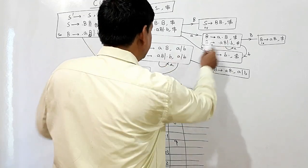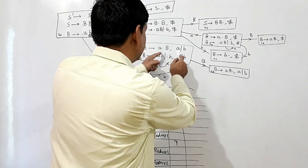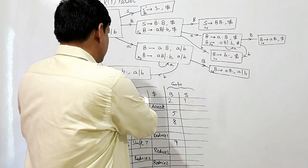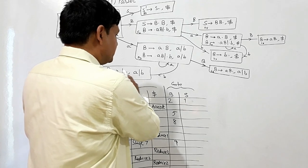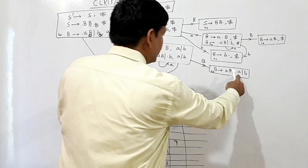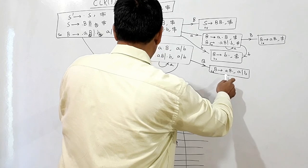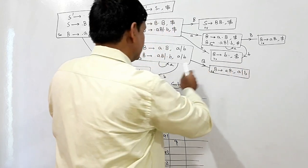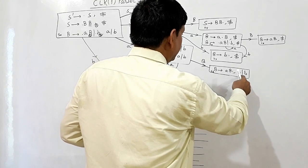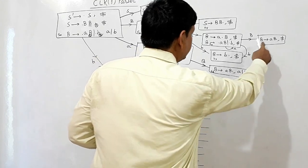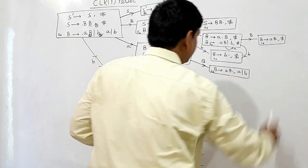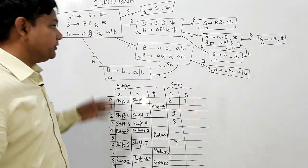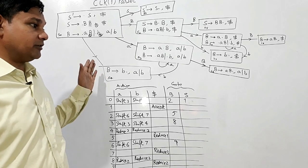For example, we have A dot B with lookahead {A, B} and A dot B with lookahead {dollar}. Similarly, B giving B dot with lookahead {A, B} and lookahead {dollar}. Also B giving A, B with lookahead {dollar} and B giving A, B with lookahead {dollar}. So these states can be merged in LALR(1) parsing.